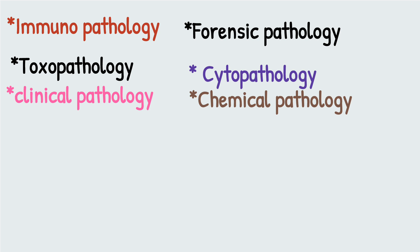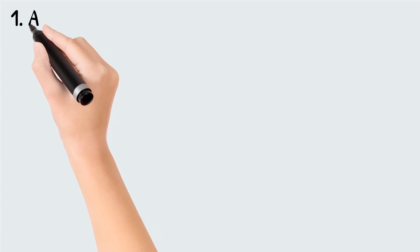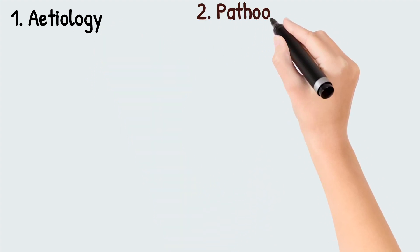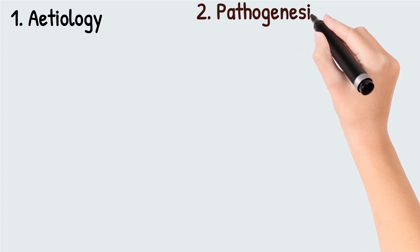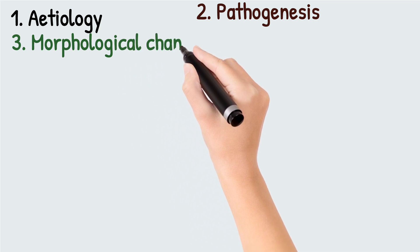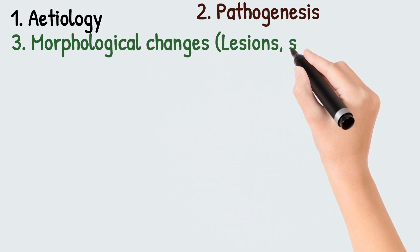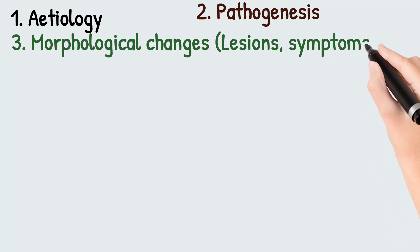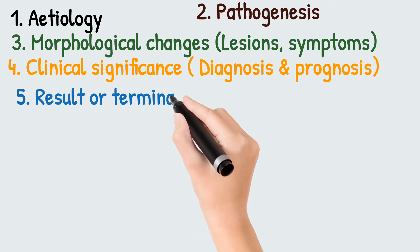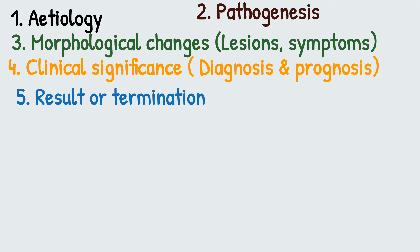Pathology covers five aspects of a disease process: number one, etiology — the cause of the disease; number two, pathogenesis — the progressive development of the disease; number three, morphological changes — the signs, symptoms, and lesions produced by the disease; number four, clinical significance — the diagnosis and prognosis; and number five, result or termination — whether the animal will recover, die, or become invalid.